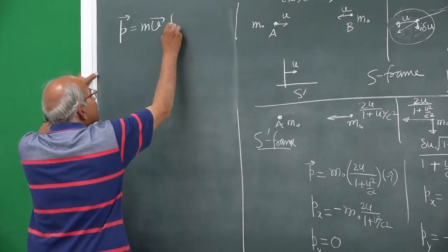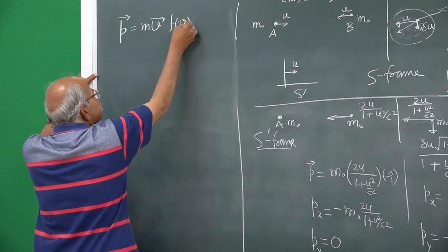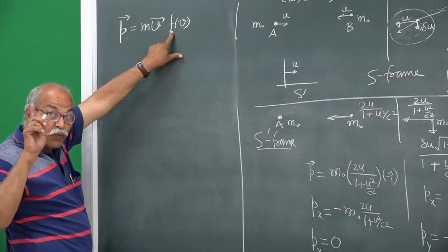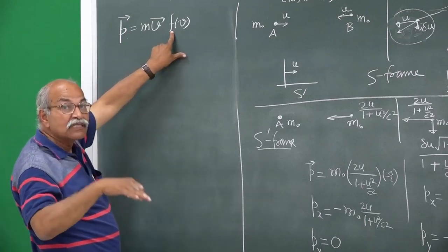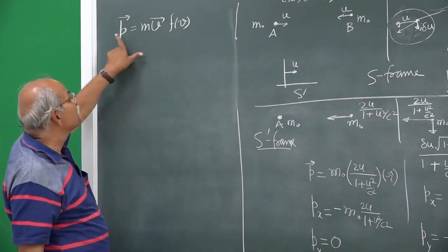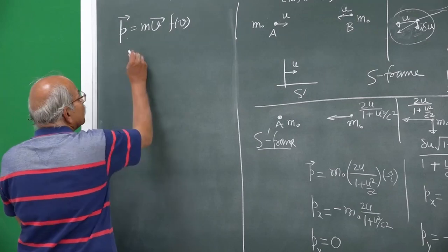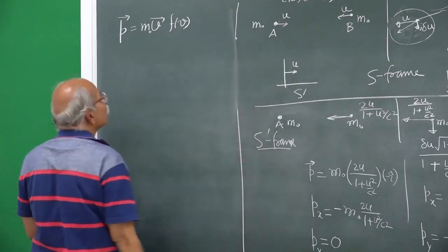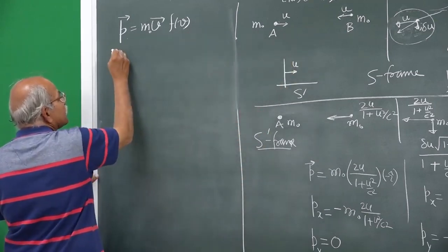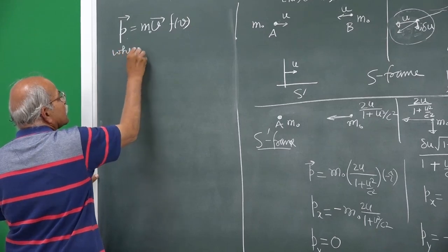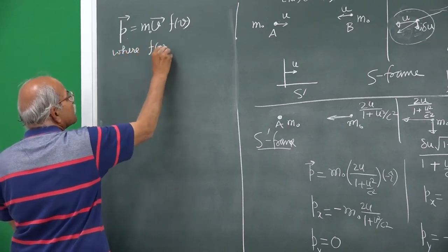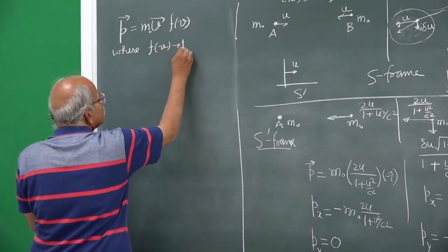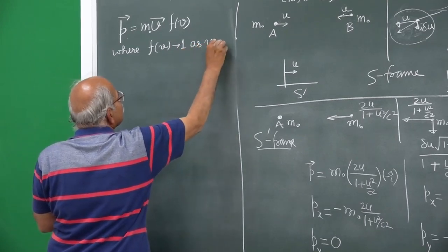Let us say that it is to be multiplied by some function of speed f(v). The requirement is that f(v) should become 1 as you approach zero velocity, because at low velocity it should work. If I take this as the definition — written with m naught — then this function f(v) goes to 1 as v goes to 0. This is our requirement, and we have to find what this function can be.